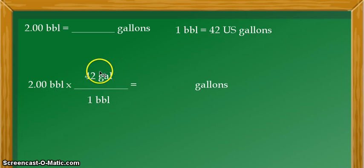So, remember the placing of the unit should be properly observed for it to cancel out. As you can see the BBL here, the unit is in our denominator in the conversion factor for it to cancel out with the given. So, we cancel the unit BBL.